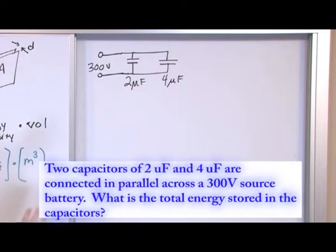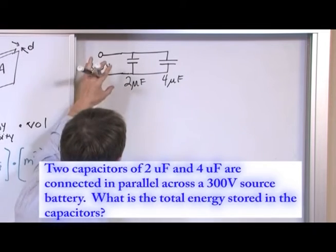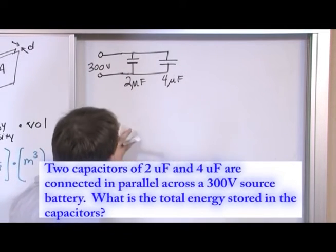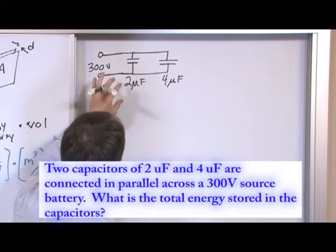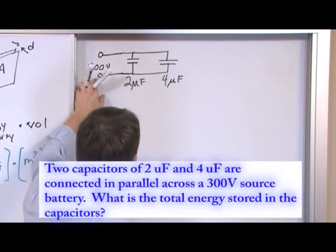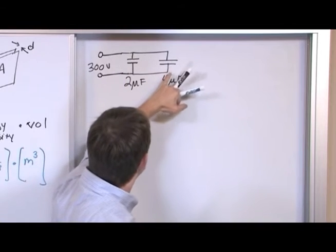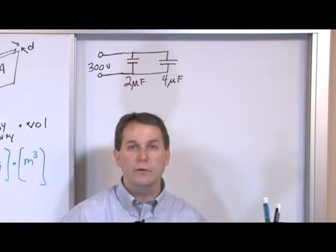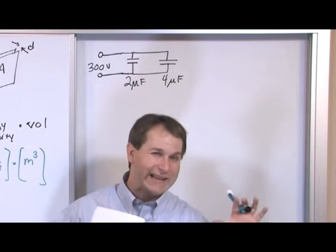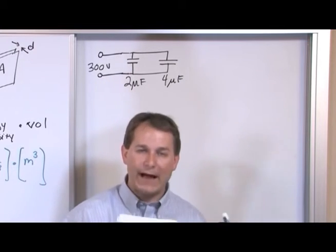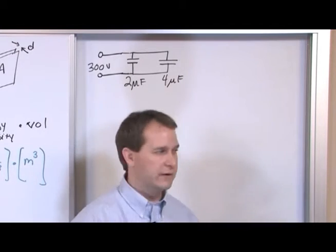Well what you need to realize first is that whenever you have anything, capacitors or later on resistors or anything, if they're directly in parallel with this battery then the voltage across this capacitor is 300 volts and the voltage across this capacitor is also 300 volts because they're directly connected in parallel to that battery. You have to know that. That's really the only trick to solving this problem.